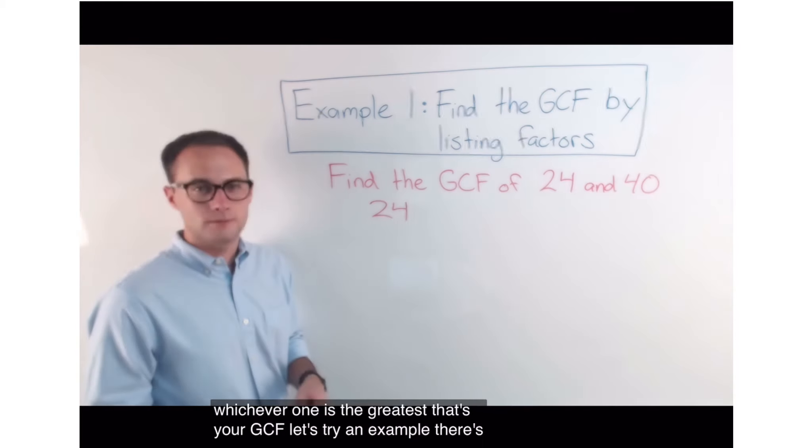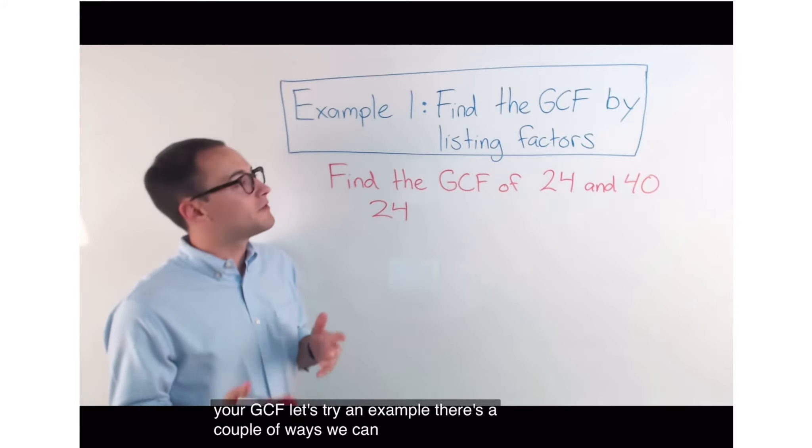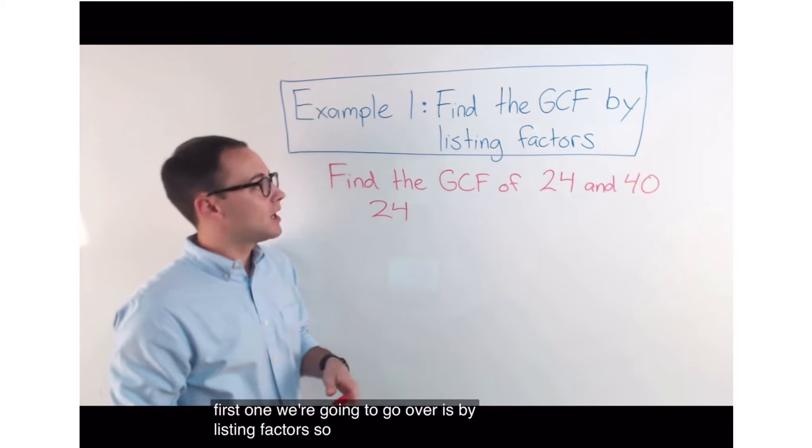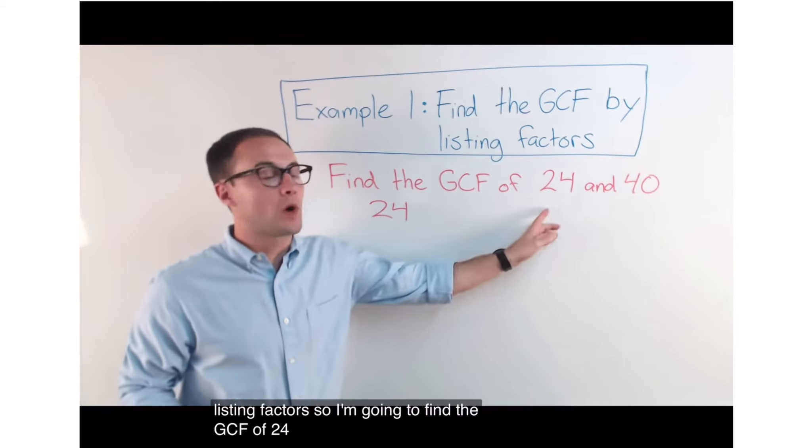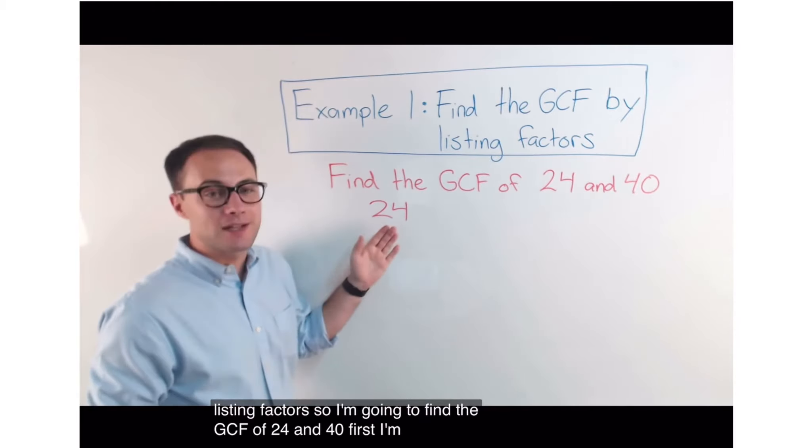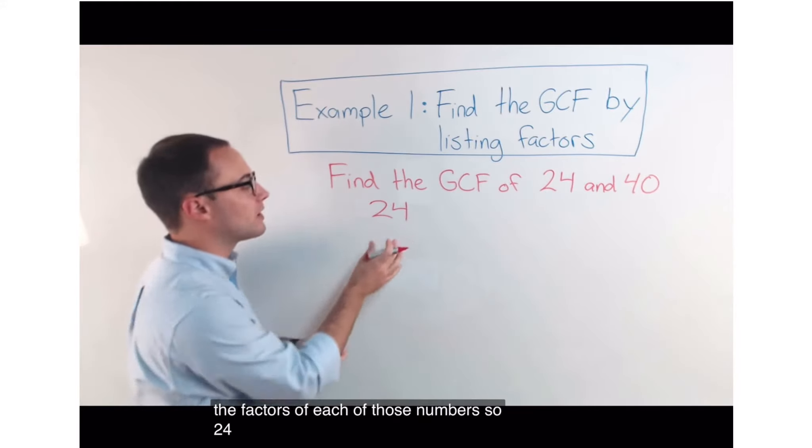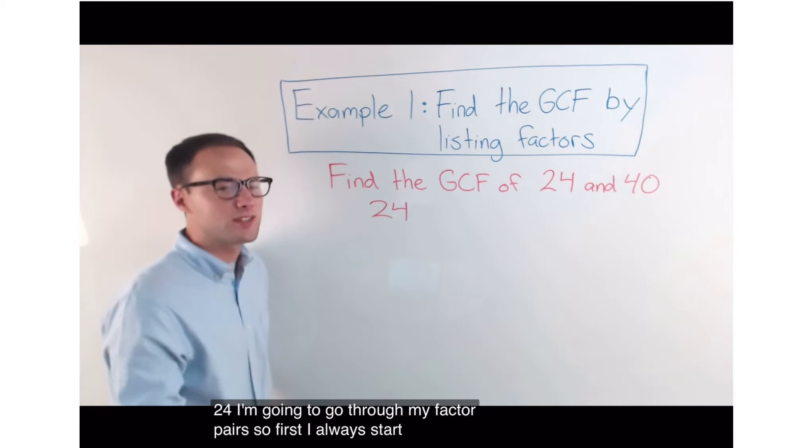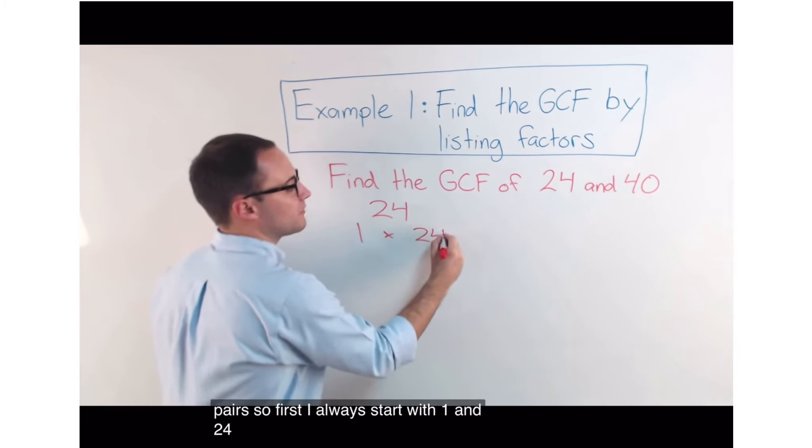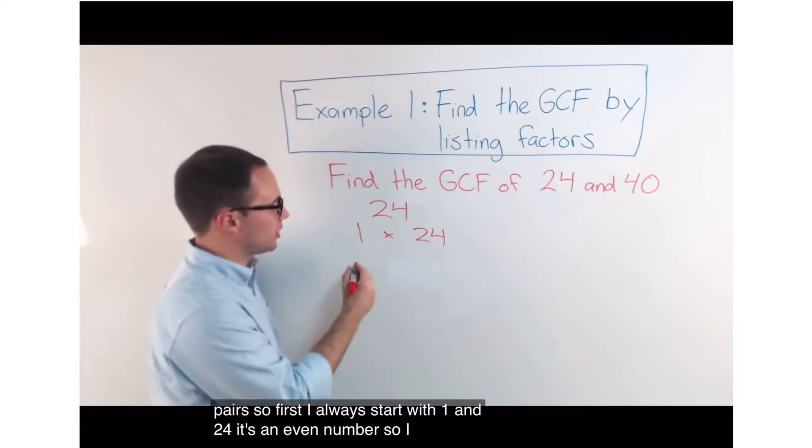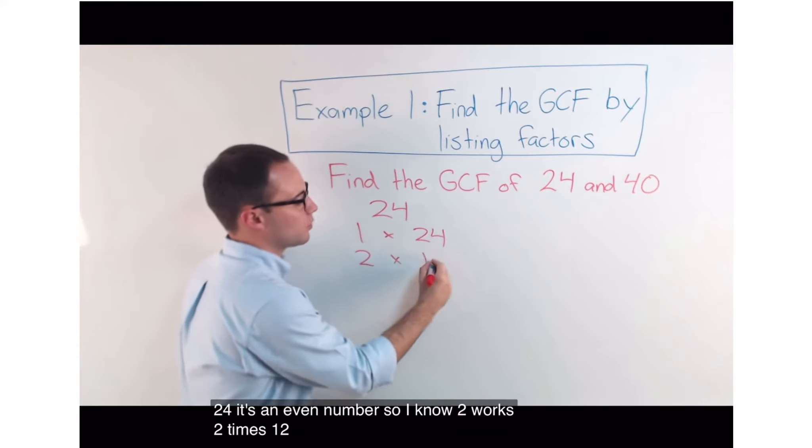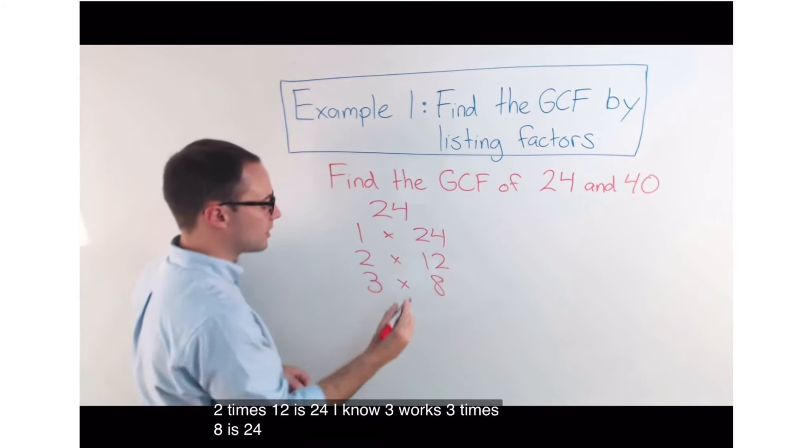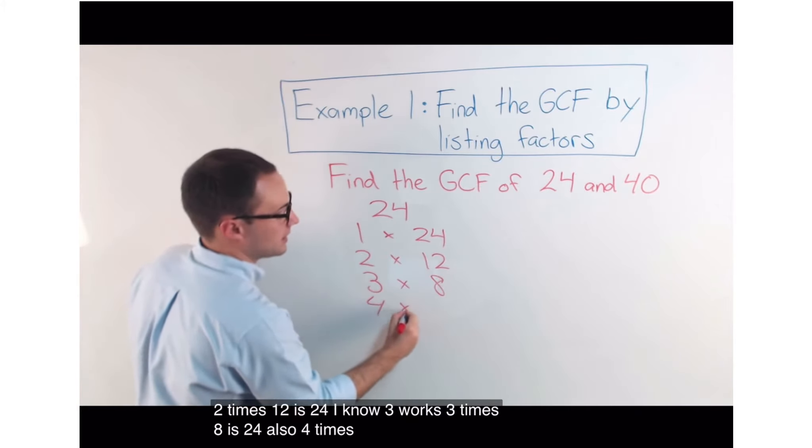Let's try an example. There's a couple of ways we can find the GCF. The first one we're going to go over is by listing factors. So, I'm going to find the GCF of 24 and 40. First, I'm going to list the factors of each of those numbers. So, 24, I'm going to go through my factor pairs. So, first, I always start with 1 and 24. It's an even number. So, I know 2 works. 2 times 12 is 24.